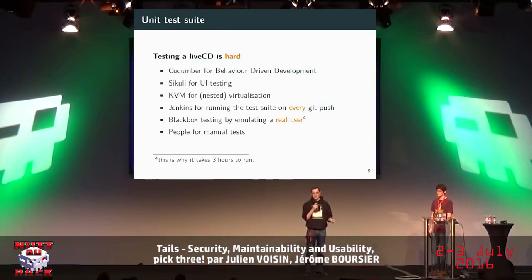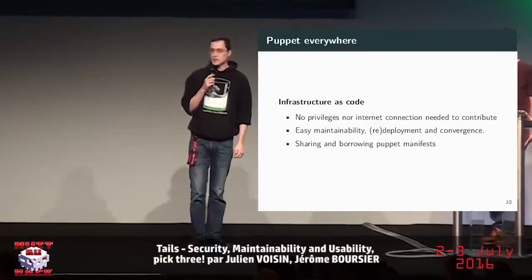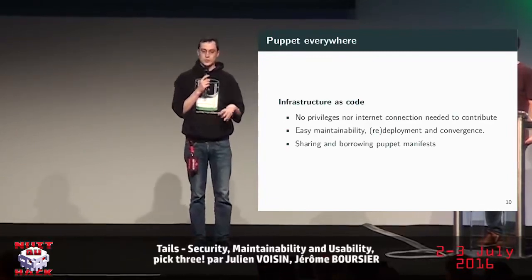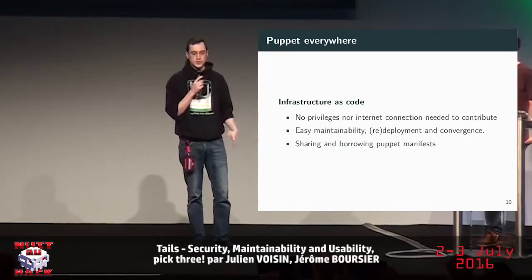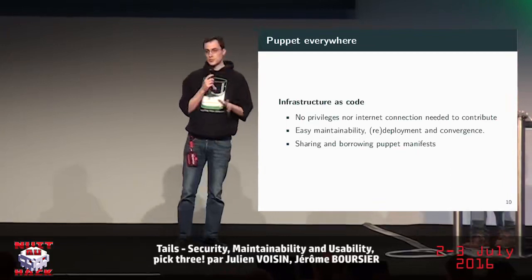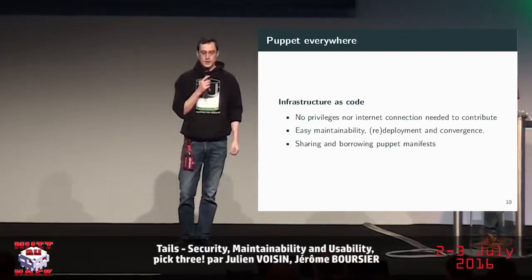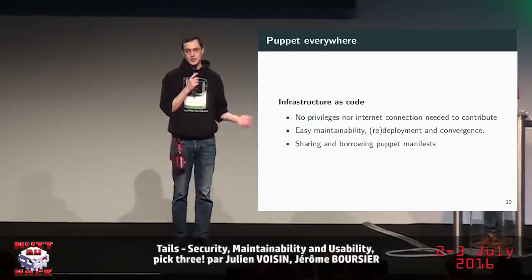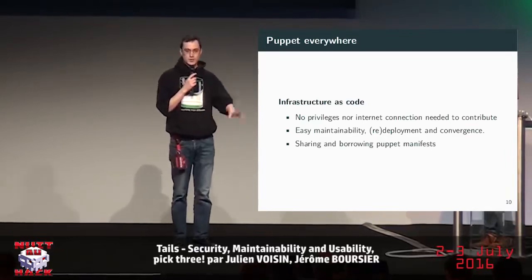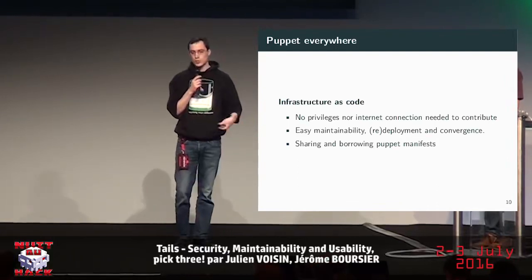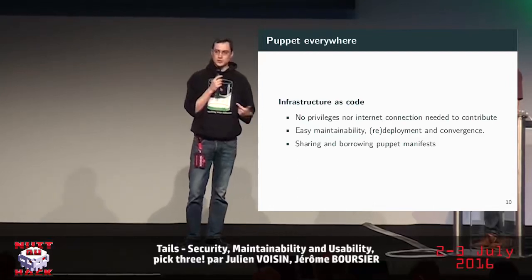For the release there are things you can't easily test automatically, so we use real people to help test the release. We also use Puppet to automate deployments — the infrastructure of the Tails project is treated like code, so you don't need special privileges or an internet connection to contribute. You just spawn a VM, write your manifest, push it with Puppet, and see how it works. It's easy to maintain: if a machine crashes, you just fire Puppet and it will redeploy infrastructure elsewhere. We can also share and borrow Puppet manifests.